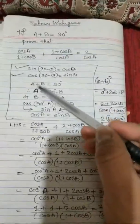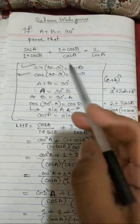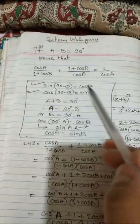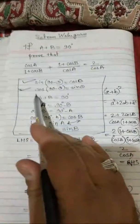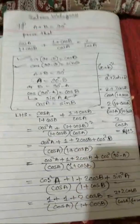This is a very beautiful sum. The only trick is to understand that a plus b equals 90 degrees, from which we get a equals 90 minus b and b equals 90 minus a, and to apply sin(90 minus theta) equals cos theta and cos(90 minus theta) equals sin theta. Using these two tricks, the sum gets solved very easily and hence proved.